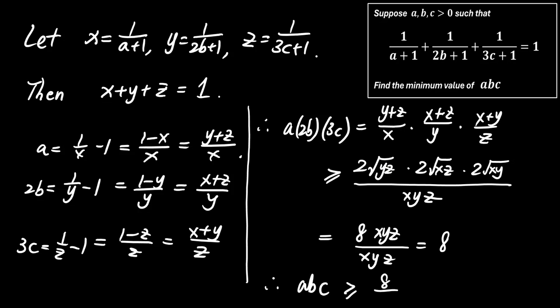So A times B times C is at least 8 divided by 6, which equals 4 divided by 3.